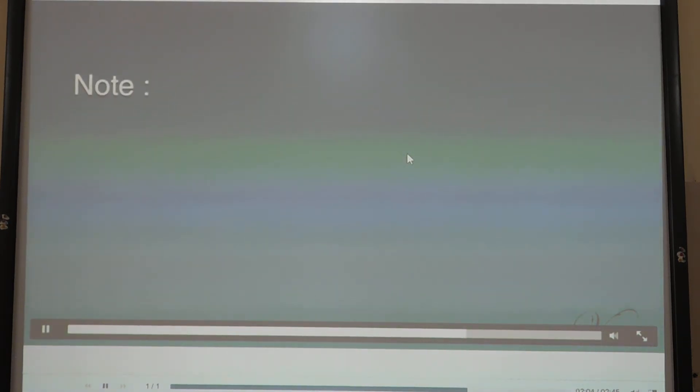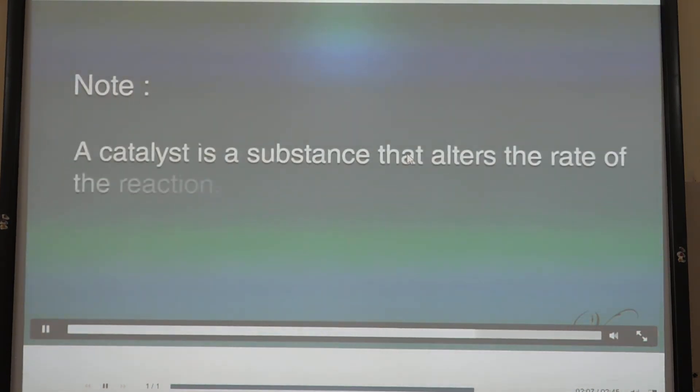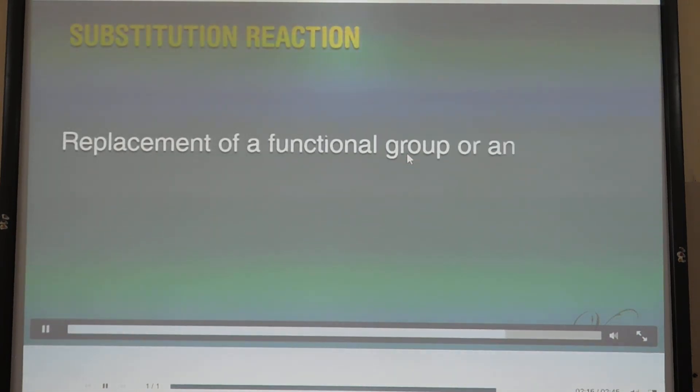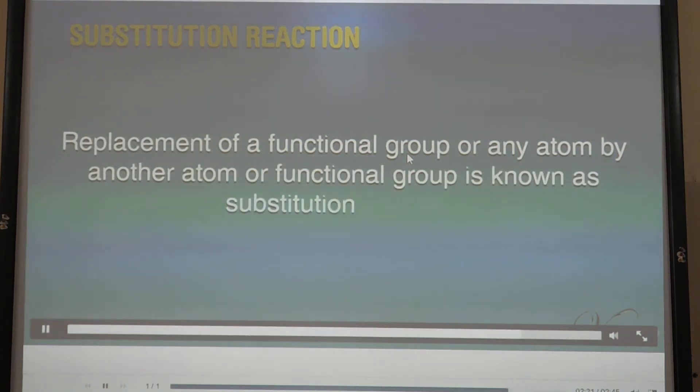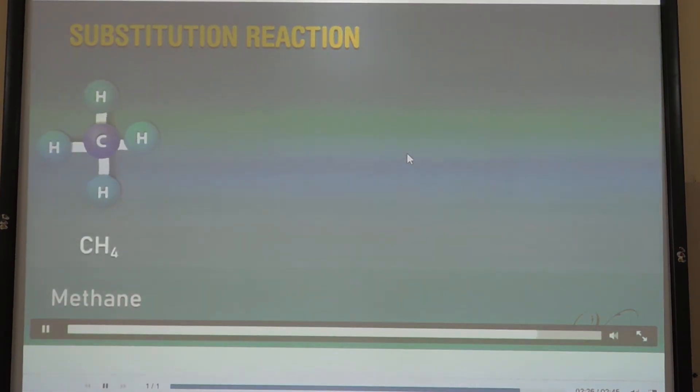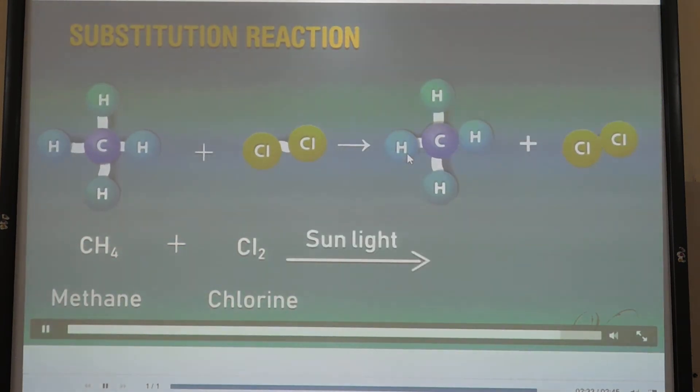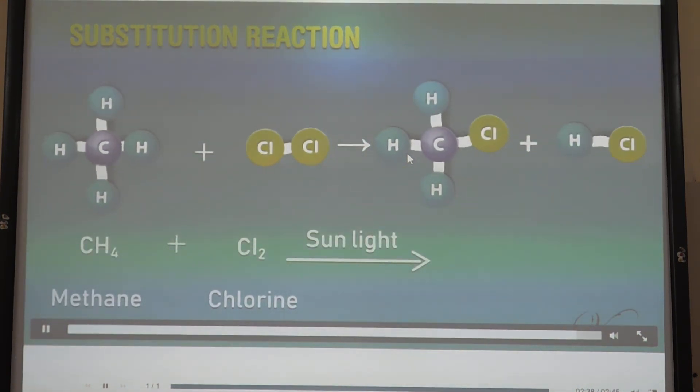Note: A catalyst is a substance that alters the rate of the reaction. Substitution reaction: Replacement of a functional group or any atom by another atom or functional group is known as substitution reaction. For example, when methane reacts with chlorine gas in the presence of diffused sunlight, it gives chloromethane and one hydrogen atom of methane is replaced by chlorine atom.